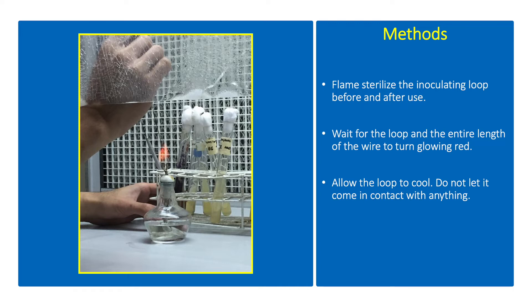Flame sterilize the inoculating loop over the flame of an alcohol lamp. Wait for the loop and the entire length of the wire to turn glowing red. This will incinerate all contaminants present on the wire before its use for the transfer of pure bacterial culture. Allow the loop to cool. Do not let it come in contact with anything.